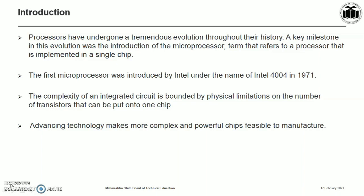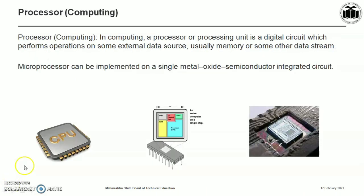The Intel 4004 was clocked at 740 kHz and delivered 92,000 instructions per second while dissipating around 0.5 watts of power. Since then, practically every year we have witnessed the launch of a new microprocessor delivering significant performance improvements. The complexity of an integrated circuit is bounded by physical limitations on the number of transistors that can be put onto one chip. Advancing technology makes more complex and powerful chips feasible to manufacture.